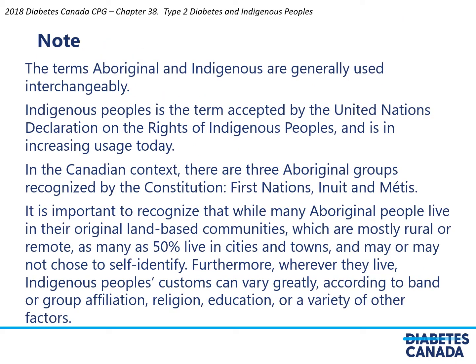Please note that in this chapter, the terms Aboriginal and Indigenous are generally used interchangeably. Indigenous Peoples is the term accepted by the United Nations Declaration on the Rights of Indigenous Peoples and is in increasing usage today. In the Canadian context, there are three Aboriginal groups recognized by the Constitution: First Nations, Inuit and Métis. It is important to recognize that while many Aboriginal people live in their original land-based communities, which are mostly rural or remote, as many as 50% live in cities and towns and may or may not choose to self-identify.